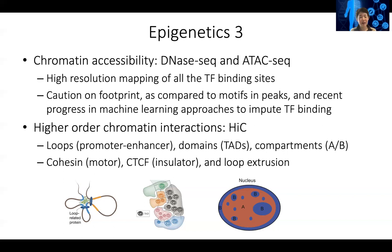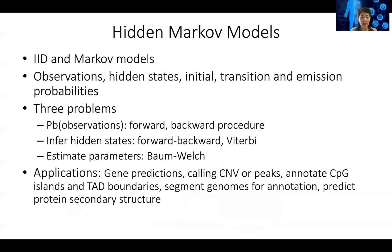These are very important concepts for understanding how genes are regulated. Epigenetics and transcription factor binding is a chicken-and-egg problem — they influence each other and work together to influence nearby gene expression. We also discussed hidden Markov models. First there is the IID process, where all observations are independent. The Markov model is where the state at one time point depends on the previous time point's state, or in second or third order Markov models, on the previous two or three time points' states.